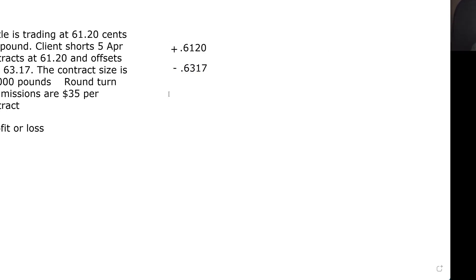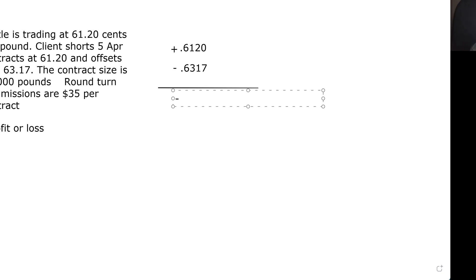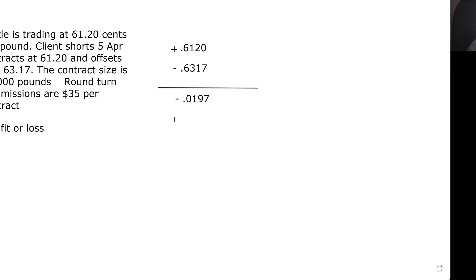Since we sold at 61.20 and then offset — offset means liquidate, they use the word offset rather than close — if you short contracts, you offset by buying them back; if you buy contracts, you offset by selling them back. We have a plus and a minus, so we subtract. That gives us minus 0.0197, which is a loss of 0.0197. We multiply 0.0197 times the contract size of 40,000, giving us a $788 loss.